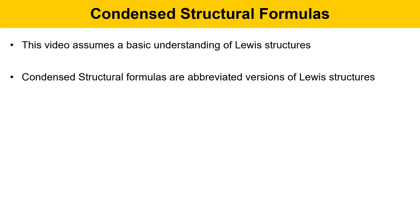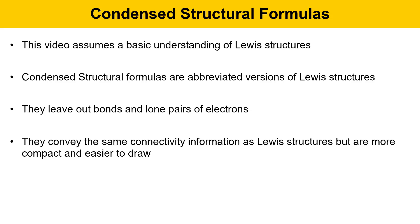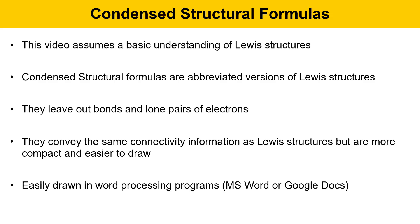Condensed structural formulas are abbreviated versions of Lewis structures. They leave out bonds and lone pairs, and they convey the same connectivity information as Lewis structures, but they're more compact and easier to draw. This is important if you're trying to draw them in a word processing program like Microsoft Word or Google Docs or some other text-based format.